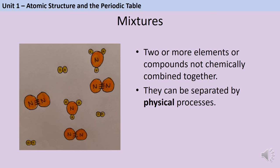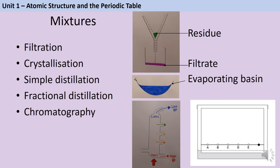Some substances aren't pure elements or pure compounds — they're mixtures. A chemical mixture contains two or more elements or compounds that are not chemically combined, meaning they can be separated by physical processes rather than chemical reactions. You need to be able to discuss five different physical processes that can be used to separate mixtures.